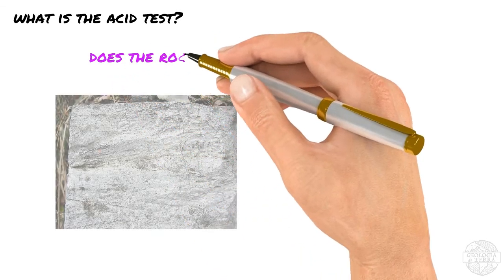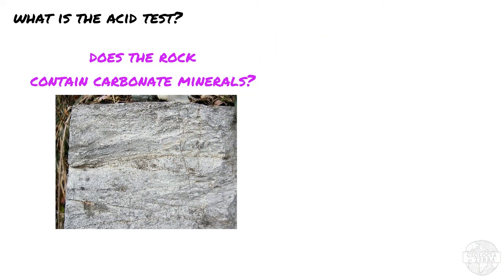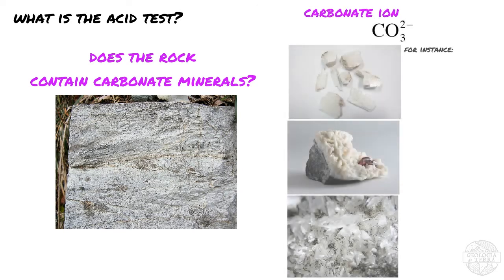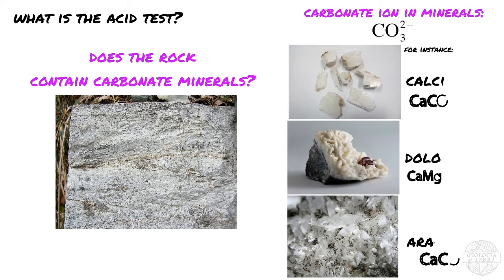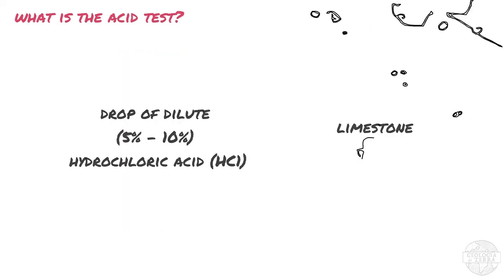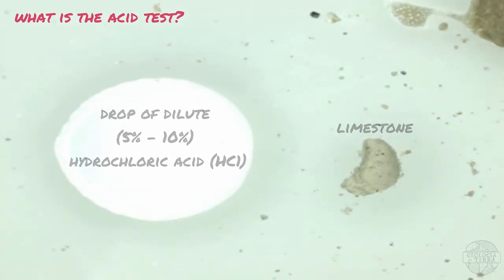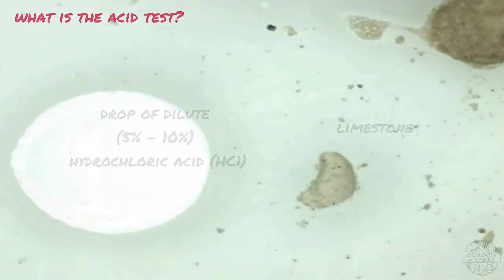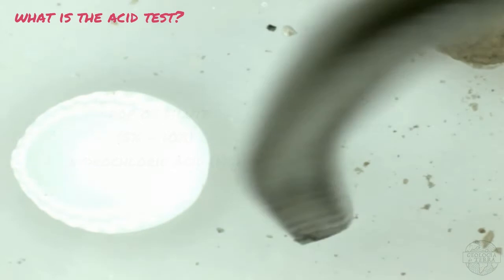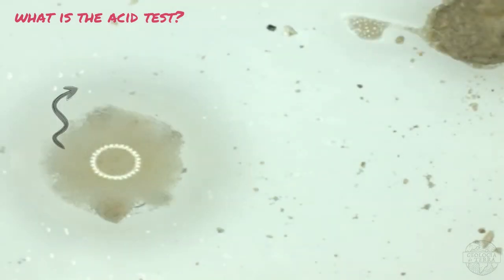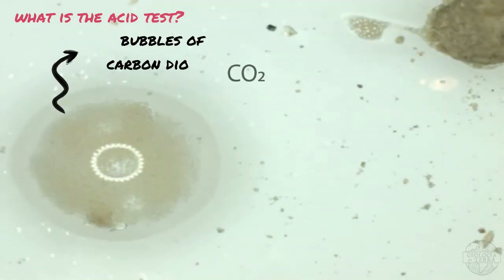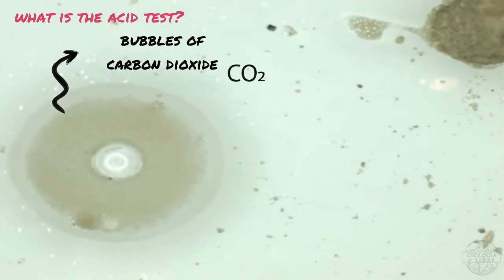So what is the acid test? The acid test is performed when we want to determine if a rock contains carbonate minerals, which are minerals that have the carbonate ion in their composition, like calcite, dolomite and aragonite. The test consists of placing a drop of dilute hydrochloric acid on a rock or mineral and watching for bubbles of carbon dioxide to be released.